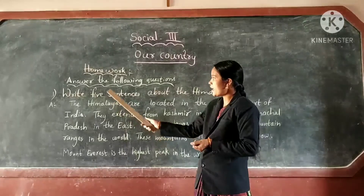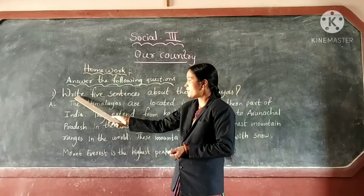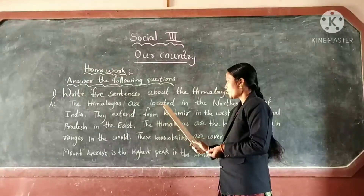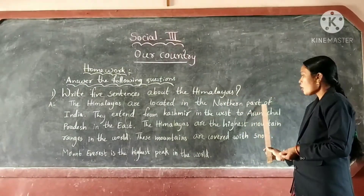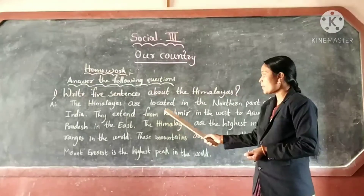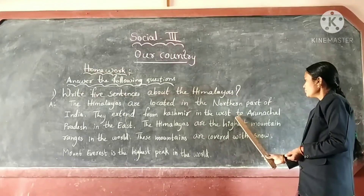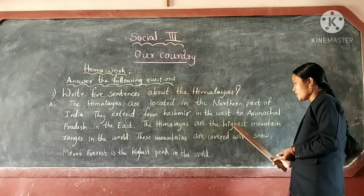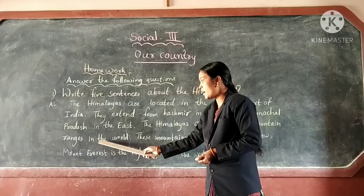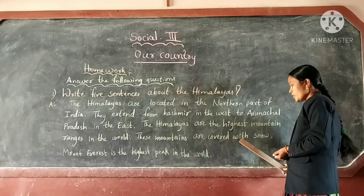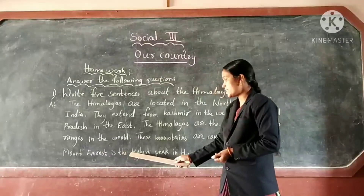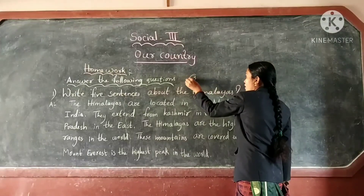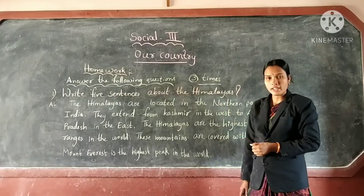Okay students, please answer the following questions. First question: write five facts about the Himalayas. Answer: The Himalayas are located in the northern part of India, extending from Kashmir in the west to Arunachal Pradesh in the east. The Himalayas are the highest mountain range in the world. Their peaks are covered with snow. Mount Everest is the highest peak in the world. Thank you students.